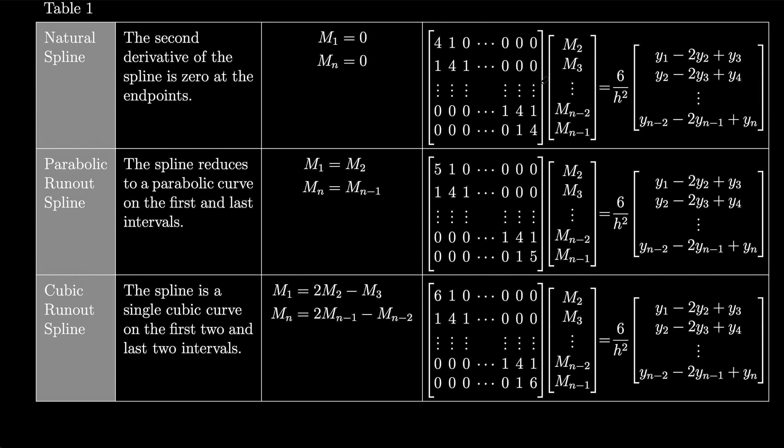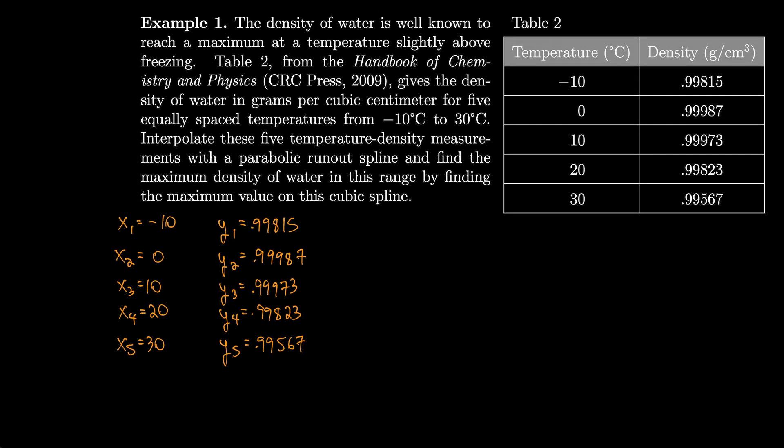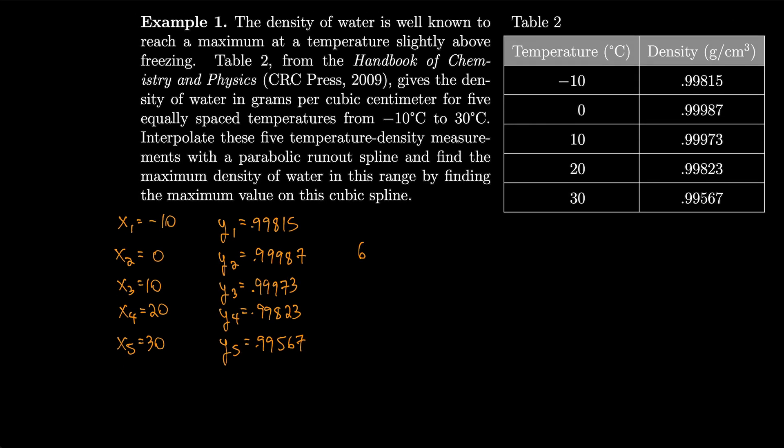So going back to our table, we need a parabolic runout spline as our second one. Let's write out this matrix over here. So we have 6 times (y1 minus 2y2 plus y3) divided by h squared. That should equal, if we do our calculations with our y's, -0.000116.